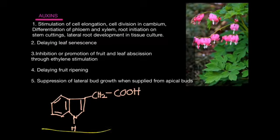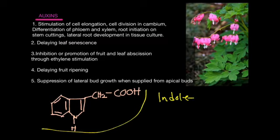Auxins also suppress lateral bud growth. Shown here is the chemical structure of auxin, which is an acid derivative — as are most of the plant hormones we'll be discussing in other videos. Auxin is also referred to as indole-3-acetic acid.